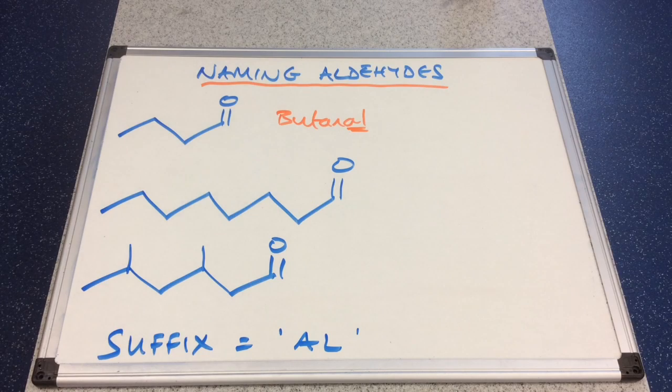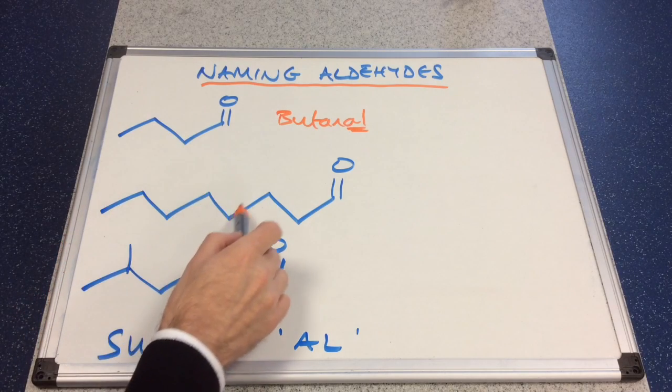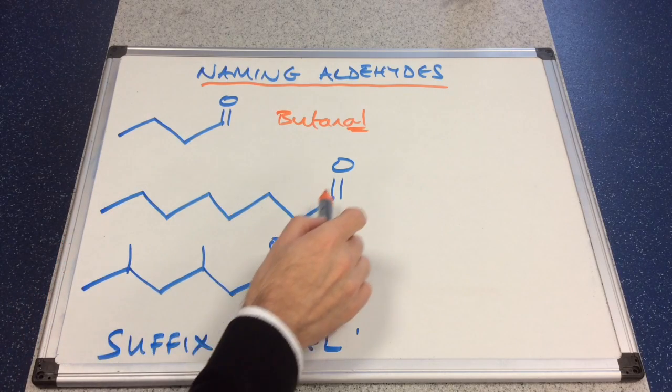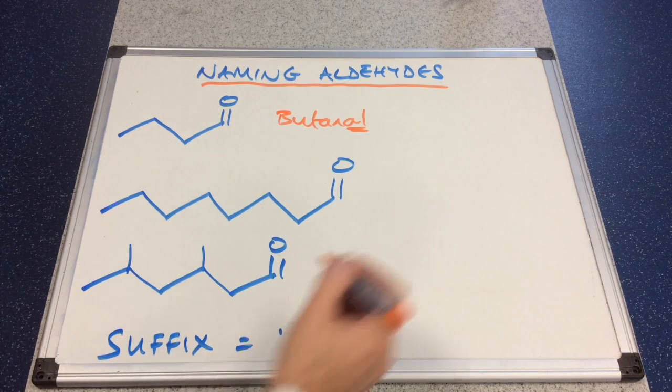Next one: one, two, three, four, five, six, seven, eight. So this would be called octanal.